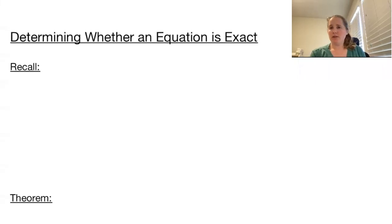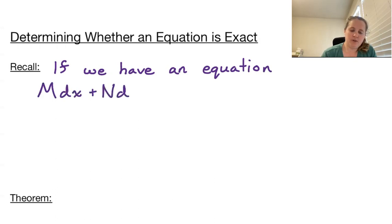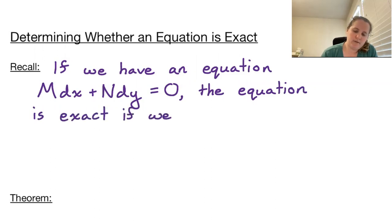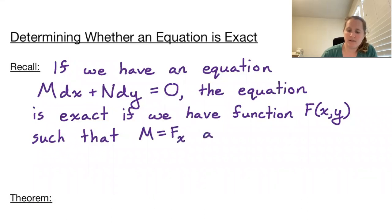Welcome to determining whether an equation is exact. Recall, if we have an equation in the form M dx plus N dy equals zero, the equation is exact if we have a function F(x, y) such that M is the first partial of capital F with respect to x, and N is the first partial with respect to y of capital F.